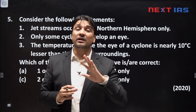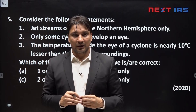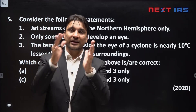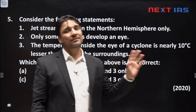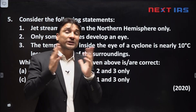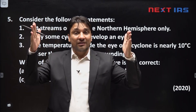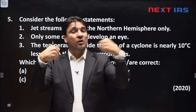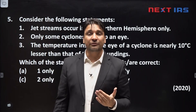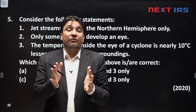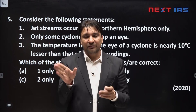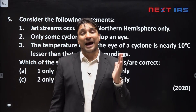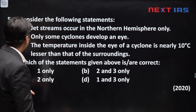There is also the polar front jet stream, or subpolar jet stream, which develops at around 60 to 65 degrees latitude between the Ferrel cell and the polar cell — again in both hemispheres. Jet streams require two conditions: a high temperature gradient in the frontal zone where cold polar and warm tropical air masses converge, and a strong Coriolis force that makes winds parallel to isobars. So the statement that jet streams occur only in the northern hemisphere is incorrect.